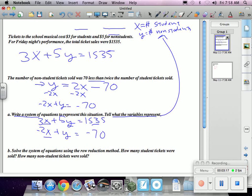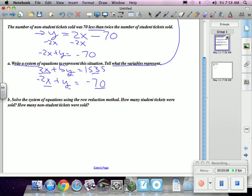And you can see the X's, which are the student tickets, the Y's, which are the non-student tickets, and the money is all lined up. So now I have my system of equations.